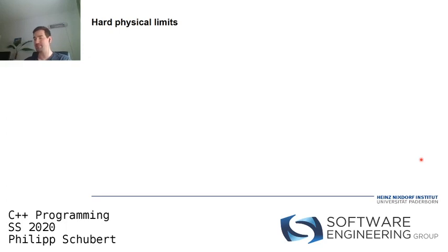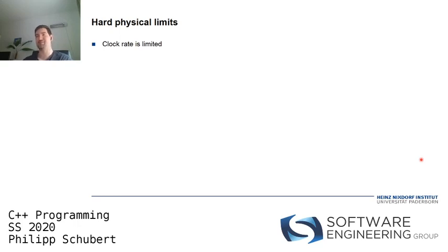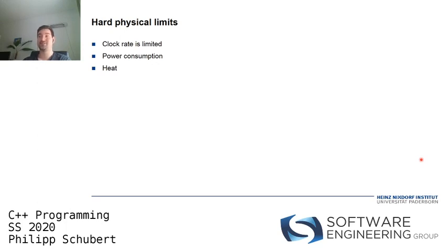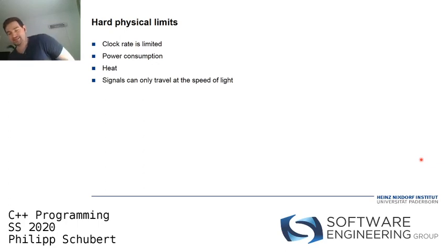If we talk about high-performance computing, we first have to talk about the hard physical limits in the real world. We cannot just make computer chips with a faster clock rate because the clock rate is limited by physics. The higher you clock your CPU, the more power it consumes — power consumption is one concern. Another concern is heat; if you melt down your machine because the processor becomes too hot, that's also unfortunate. The main point is that signals can only travel at the speed of light — that is the main restricting factor.